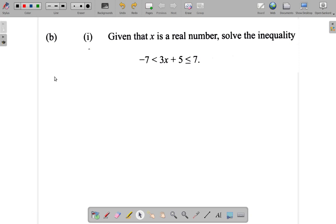I have negative 7 is less than 3x plus 5, which is less than or equal to 7. I subtract 5 from here, subtract 5 from here, and subtract 5 from here.